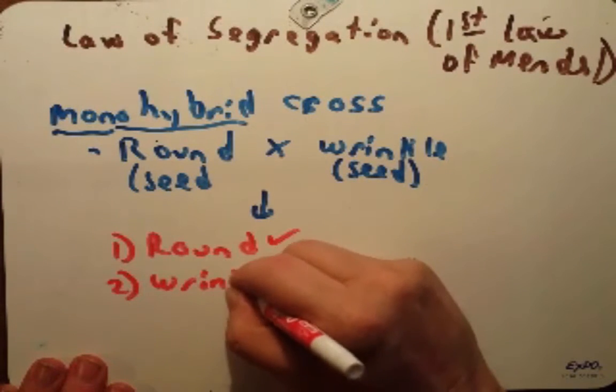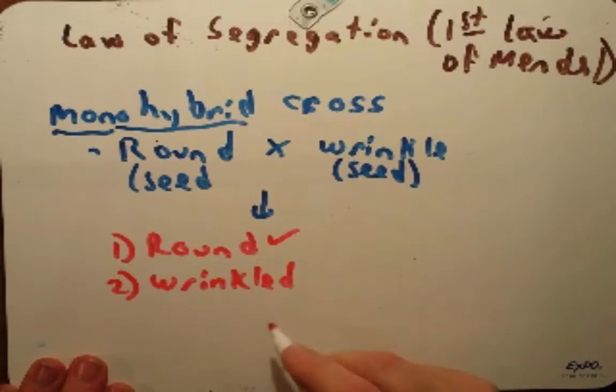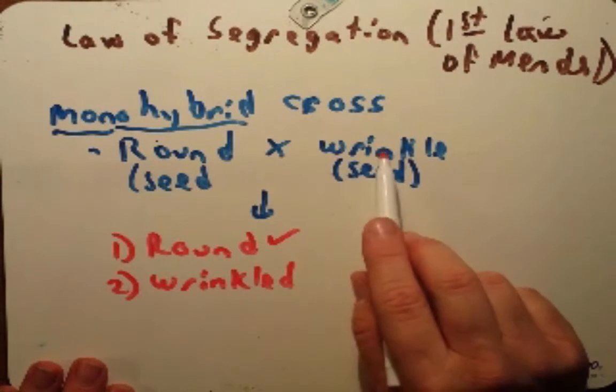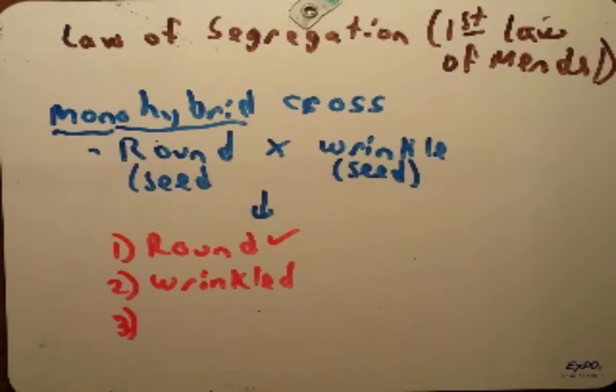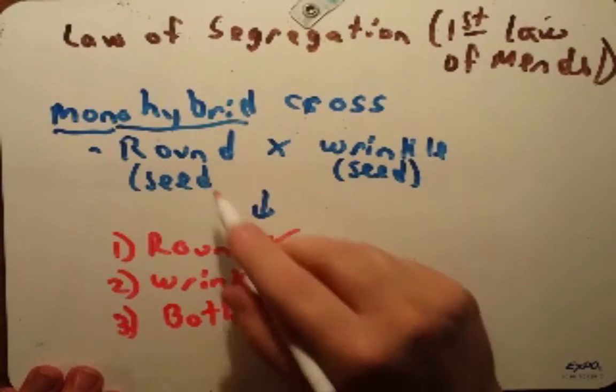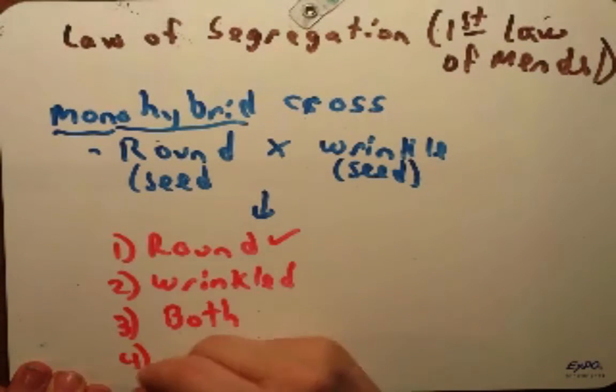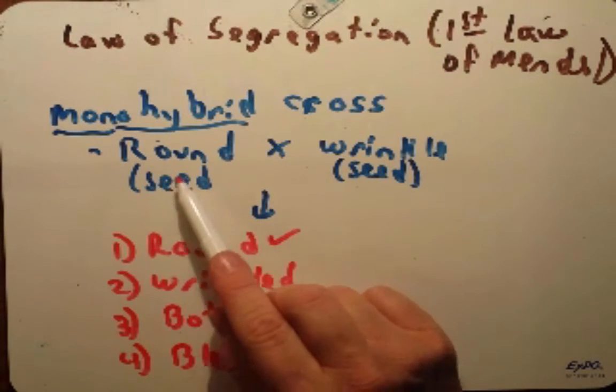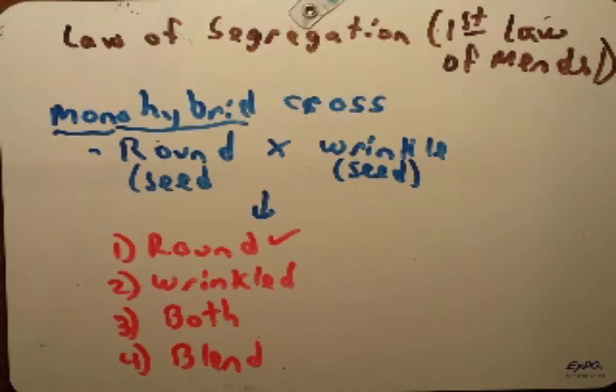Let's talk about the other possibilities that they might have seen. Wrinkle, maybe the seeds would have had this phenotype of this parent. Maybe you would see both traits, a seed that had some parts that were round and smooth and other parts that were wrinkled. Maybe you would see a blend. Maybe when you look at that seed it's not as round as this one and not as wrinkled as this one, somewhere in between.